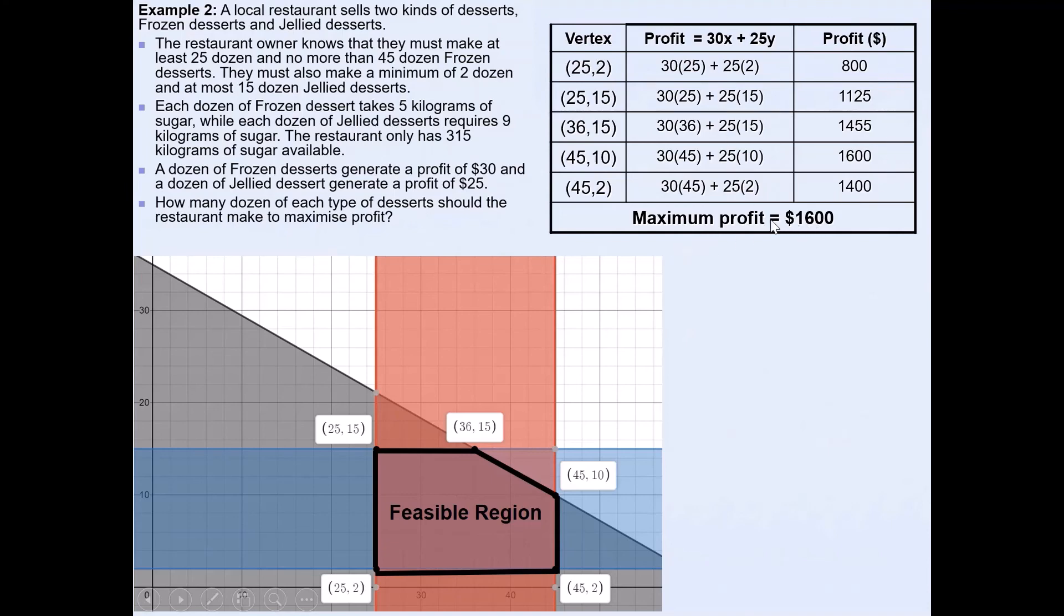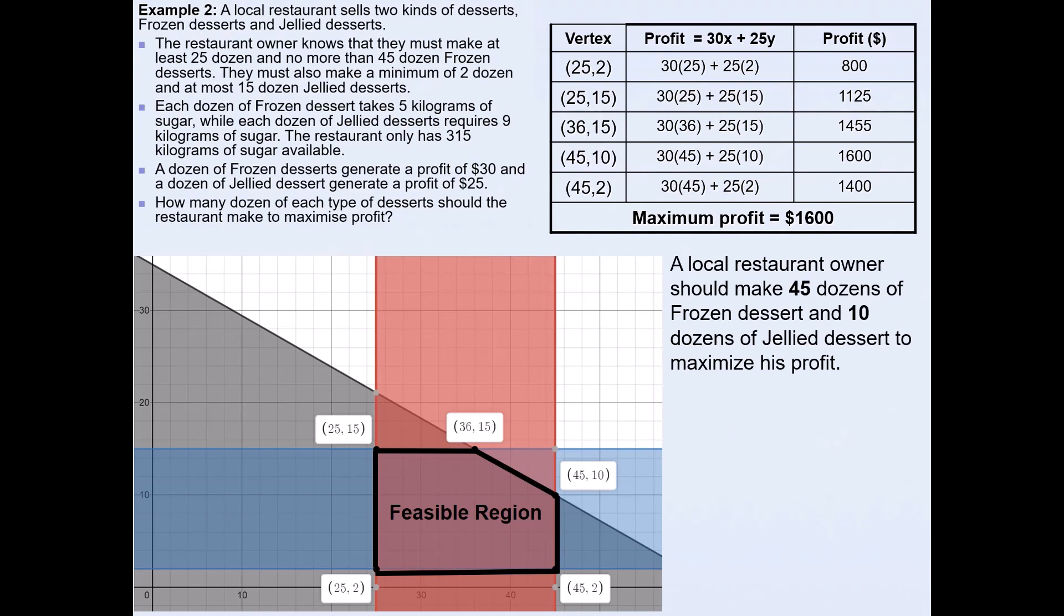And in this case you can see the maximum profit is $1600. And then you write a sentence. A local restaurant owner should make 45 dozens of frozen dessert and 10 dozens of jellied dessert to maximize his profit. And you can see that over here $1600 is the maximum profit where the x value which was frozen dessert is 45 and the y value which represents jellied dessert is 10. And this will give him a maximum profit of $1600.